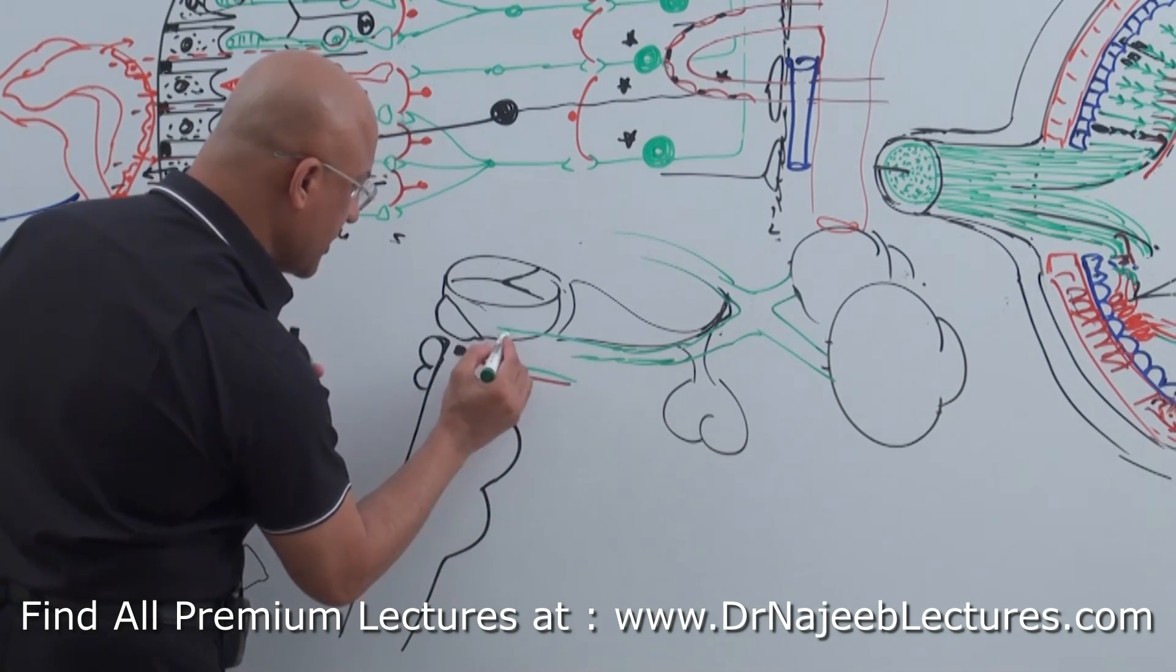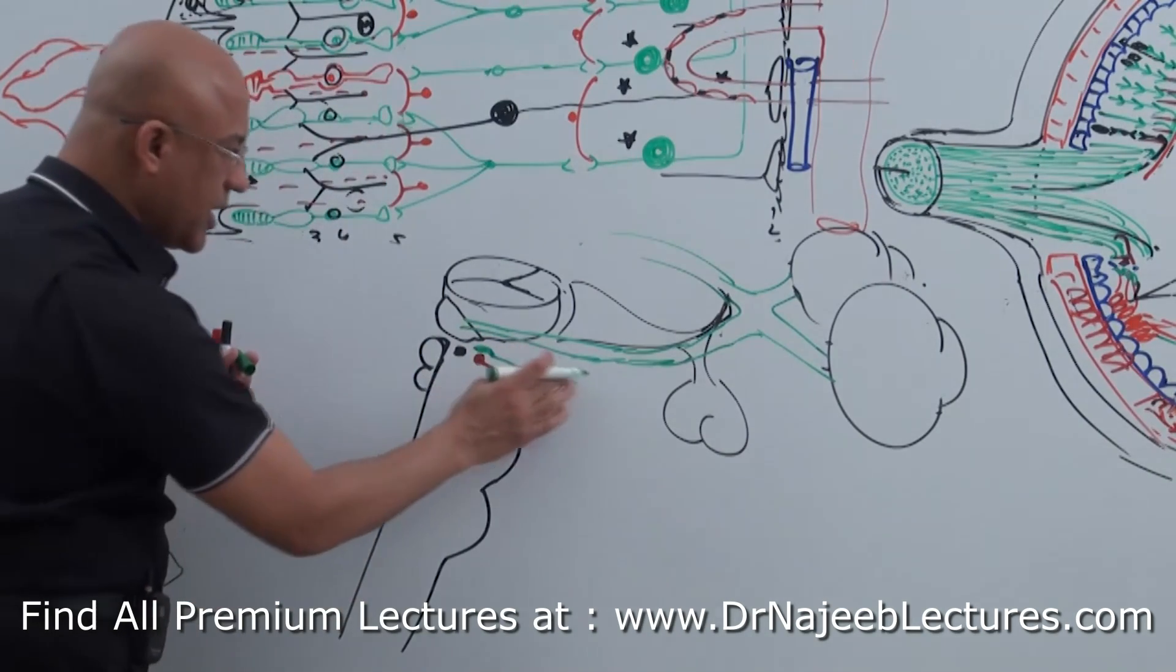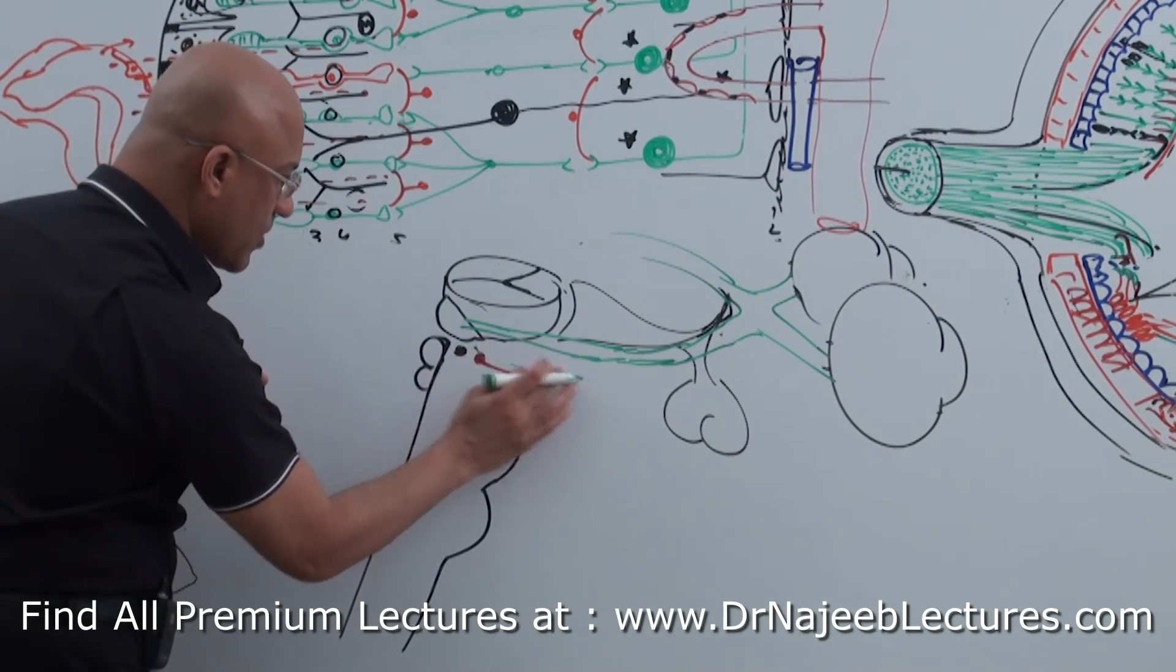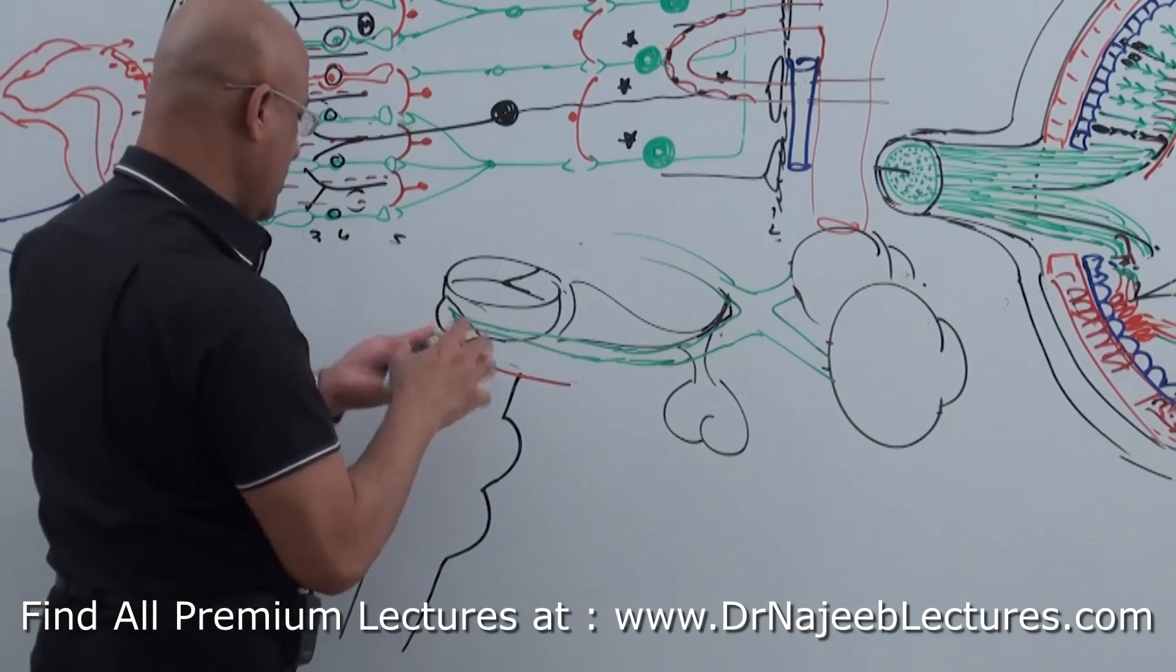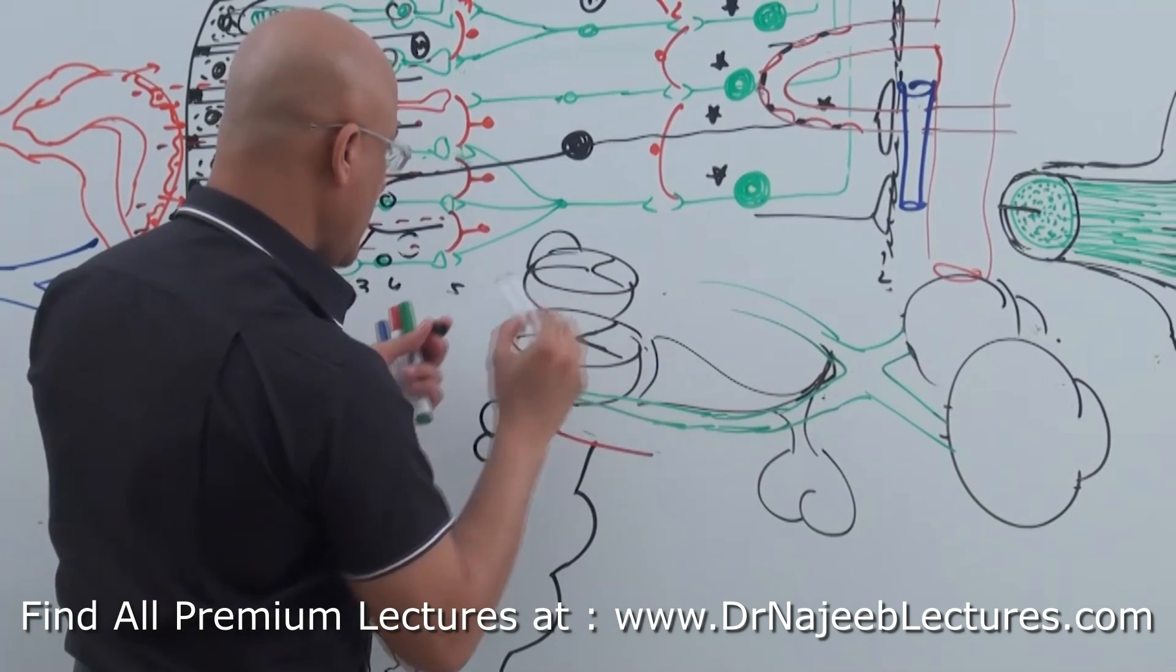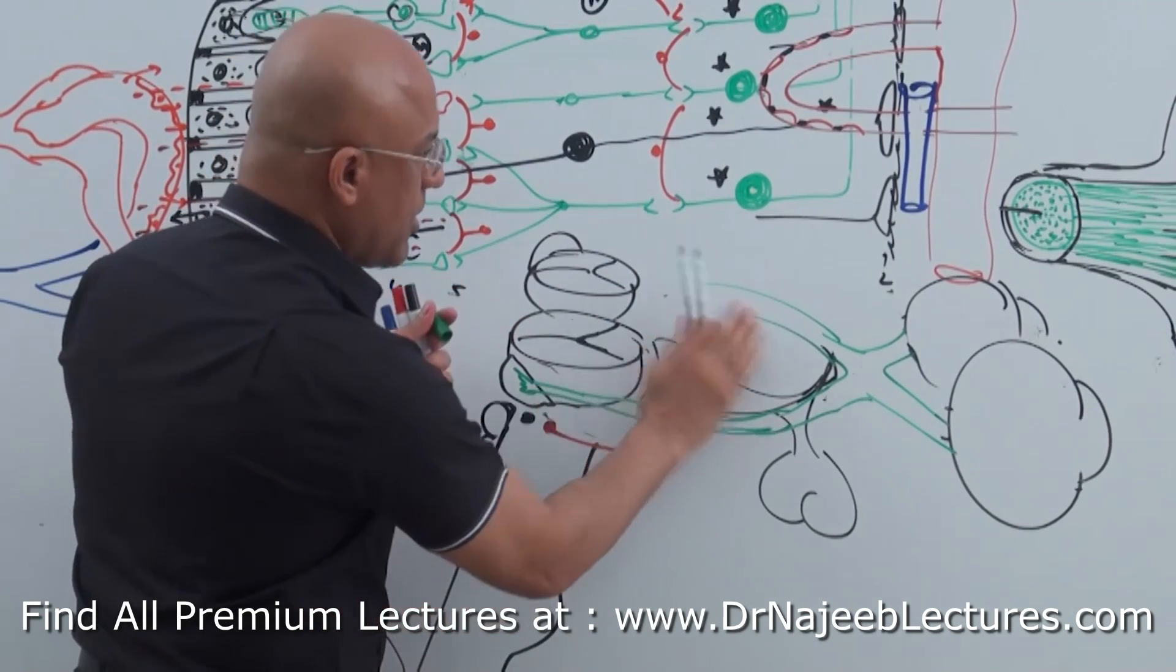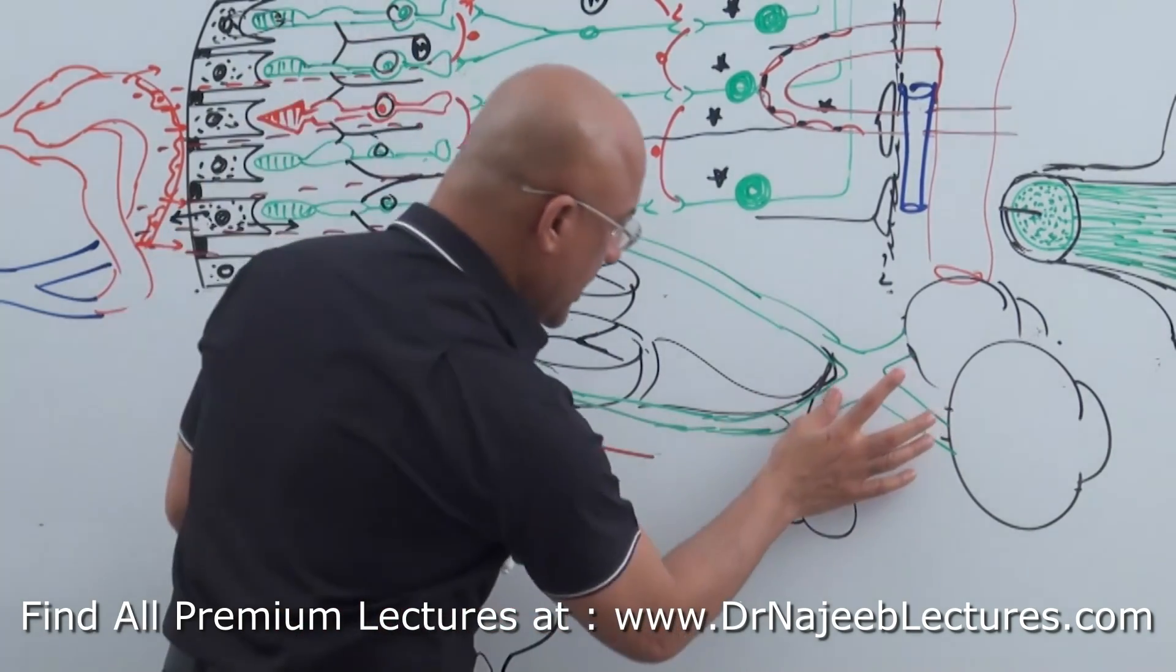And this optic tract mainly ends up into lateral geniculate body. And of course this will also end up on the other side on the lateral geniculate body.